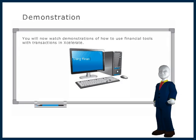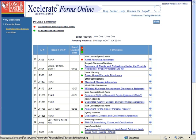You will now watch demonstrations of how to use the financial tools with transactions in Accelerate. This video will explain how to access those tools from your transaction. To learn how to use each financial tool, please view the training video for that particular tool. Start the process by clicking a new transaction or opening an existing transaction. This can either be a listing or a sales transaction.